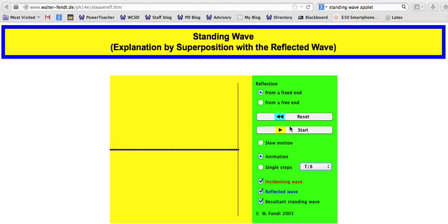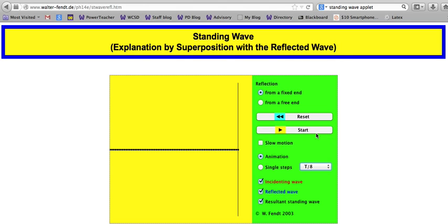They're created by this idea of superposition, where waves that occupy the same space—and waves can actually do that, they can pass right through each other—add together when they occupy the same space at the same time.